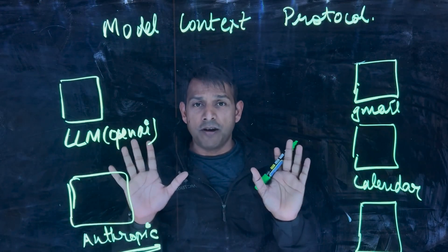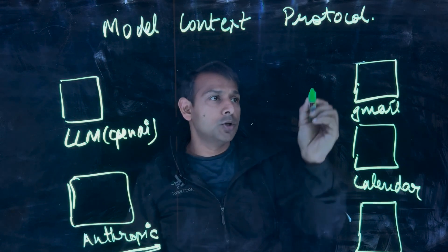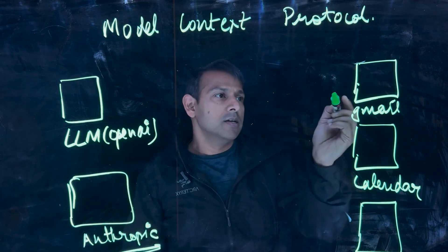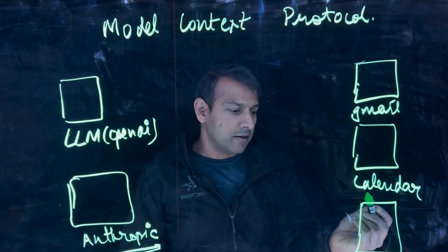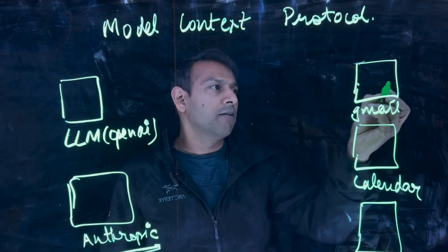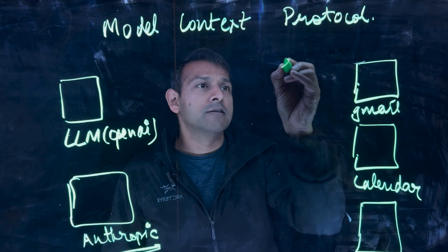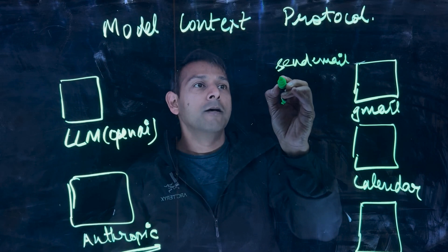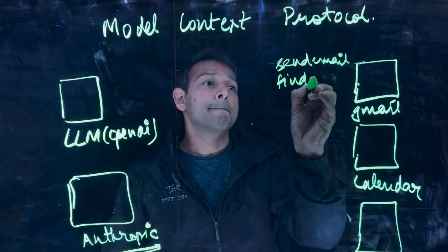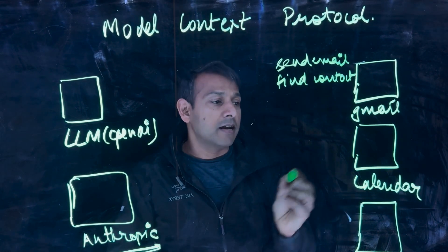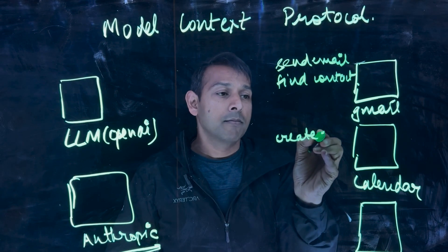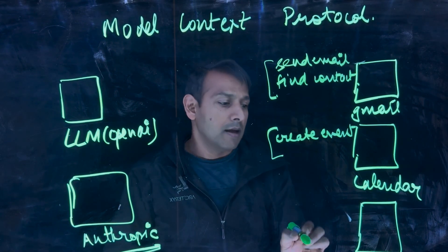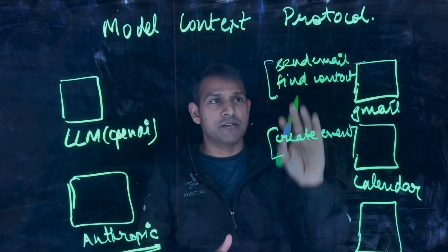So essentially one of the ways to simplify this whole interaction is for these tools to define functions very explicitly. So in our nomenclature here, Gmail is a tool, calendar is a tool, CRM is a tool. Gmail can define functions such as send email or find contact. Calendar can have create event. These are functions and each of the tools can have very specific functions.